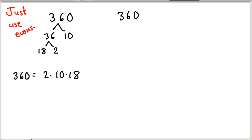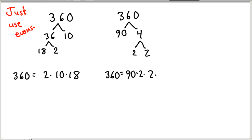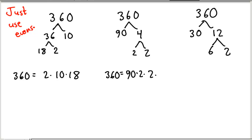Now someone else may get off to a different start. They may say it's 90 times 4. Then 4 is 2 times 2, and 90 — you can't break it into a product of two even numbers. So once again I'm stuck. 360 is 90 times 2 times 2. And then a third person might say I'm going to start with 30 times 12. 30 can't be broken up as a product of evens. 6 times 2 is 12. So we get 2 times 6 times 30. So I'm getting different factorizations depending on how I get started.